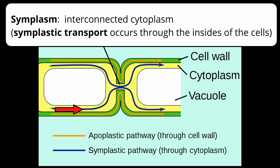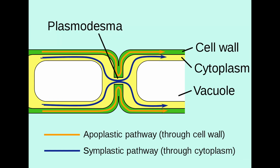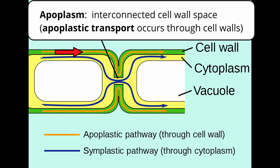Having all these cytoplasms connected together creates a system called the symplasm. When the plant moves materials only through the symplasm, it's called symplastic transport, symplastic pathway, etc. It's a more passive movement. Another option is for cells to move things out of the cytoplasm into the cell wall first, and then move cell wall to cell wall. This connected cell wall space is called the apoplasm.